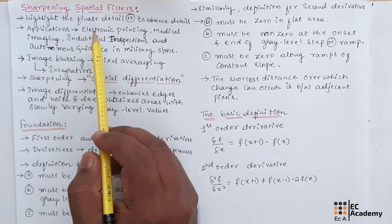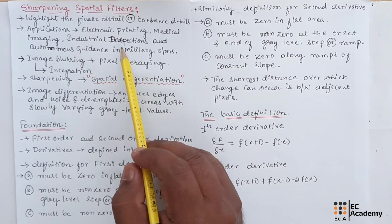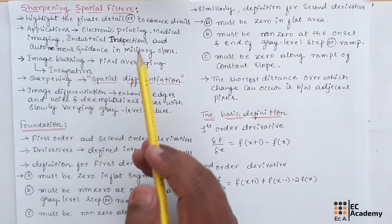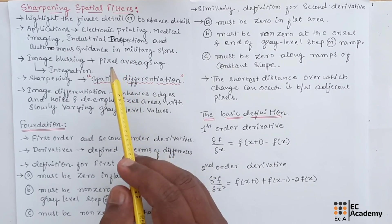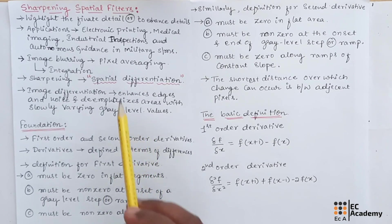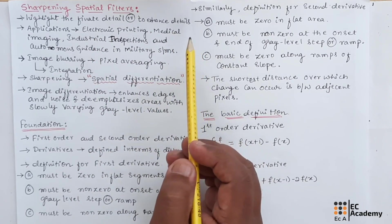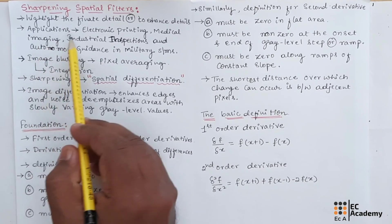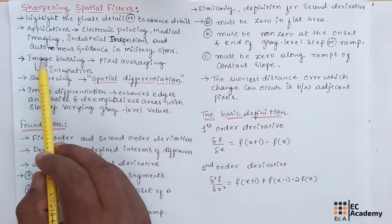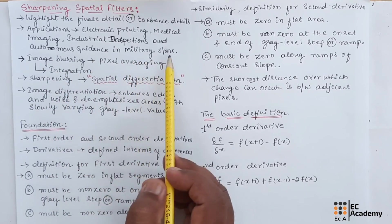The principal objective of sharpening is to highlight the finite details in an image or to enhance the detail that has been blurred either in error or as a natural effect of a particular method of image acquisition. It has a wide variety of applications including electronic printing, medical imaging, industrial inspections, and autonomous guidance in military systems.